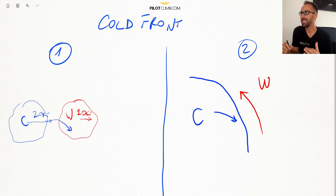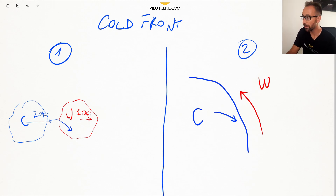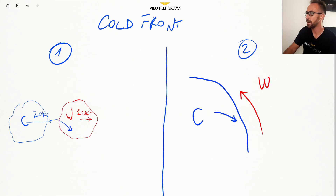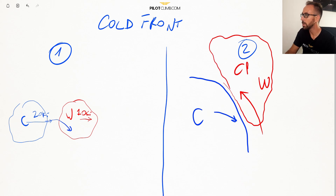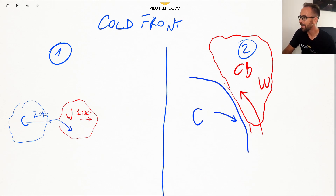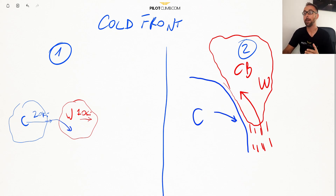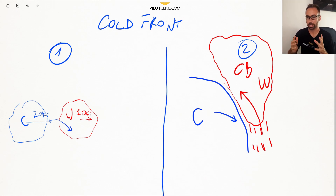When the cold mass of air reaches the warm mass of air, since the cold air is denser, it goes under the warm air and pushes it upward. The key difference between the warm front and the cold front is already visible in the slope — the warm front had a shallow slope, but the cold front has a much steeper slope because the cold air pushes the warm air up very quickly, producing vertical clouds such as cumulonimbus — CBs.